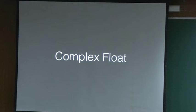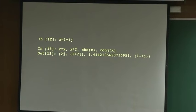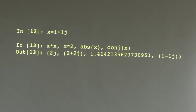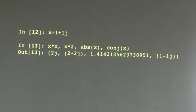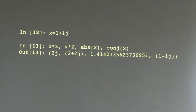Complex float: Python will allow complex float representation. It is very simple. You write the number as real plus imaginary j, like 1 plus 1j, and you can do operations with that. I can square a number - x squared gives 2j, you can verify that is easy. You can multiply by a number, get the absolute value of x or conjugate of x. It is very useful if you are doing quantum mechanics - it is trivial.